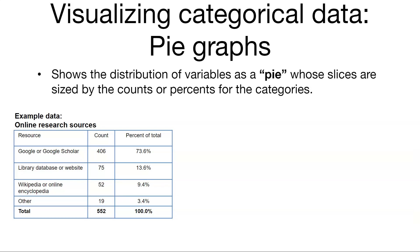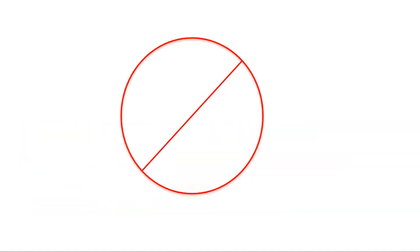The other way to visualize categorical data using the same data set are pie graphs or pie charts. This is showing the distribution of variables as a pie and the slices are sized by usually the percents for the categories. And so here's the same data we just looked at but it's showing the differences in terms of a pie graph. Now that was the last pie graph you will ever see in this class. And we're going to talk about why that is right now.